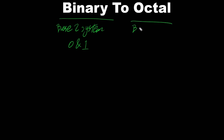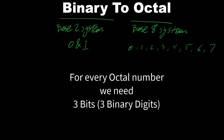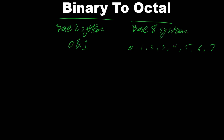In the octal system we have 0, 1, 2, 3, 4, 5, 6, and 7. Therefore, for every octal number we need 3 bits. Let's see why — if we put 3 bits, the decimal values are 1, 2, and 4, coming from 2 to the power of the bit position. Keep in mind: for every octal number we need 3 bits.